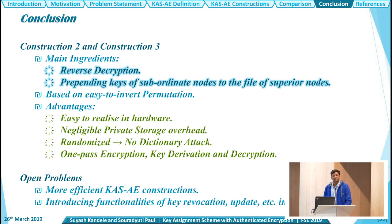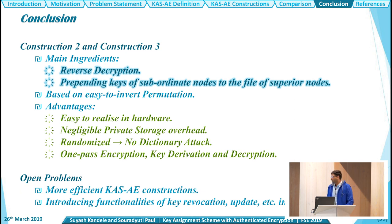In conclusion, Constructions 2 and 3 have the super advantage of reverse decryption and prepending keys of subordinate nodes to the files of superior nodes. They are based on easy-to-invert permutations, which offer the advantage of being easy to realize in hardware, and have negligible private storage overhead. They are randomized and therefore avoid all dictionary attacks. They have one-pass encryption, key derivation, and decryption mechanisms. We leave as open problems: constructing more efficient CAS-AE schemes, and introducing functionalities like key derivation and file updating into CAS-AE.